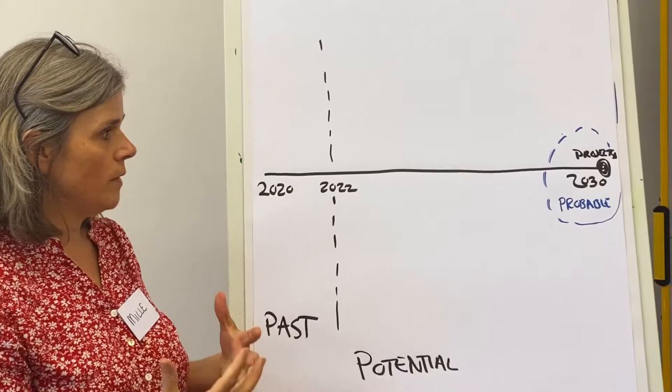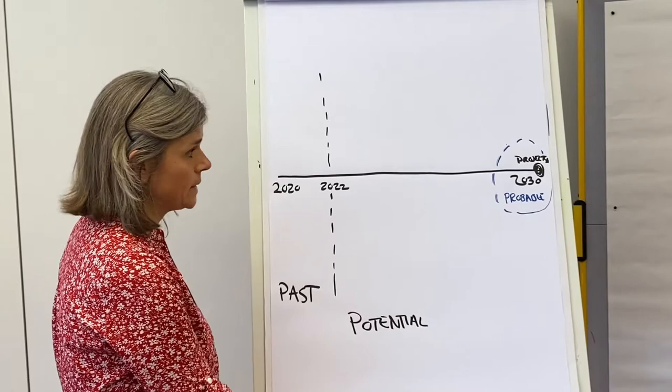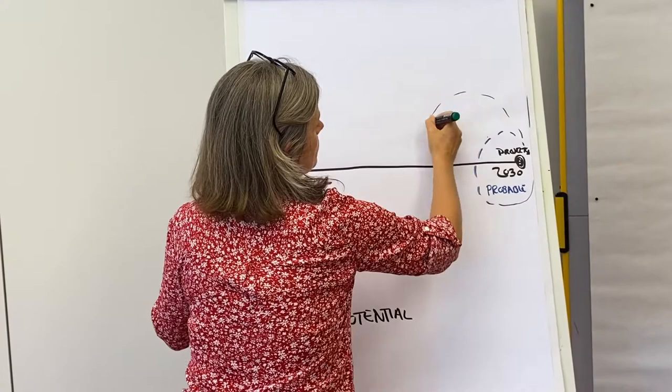And so this is the conversation where we're trying to predict the future, where we're maybe having conversations about what I think will happen, what you think will happen, and we'll pat ourselves on the back if we're right in the future. So we like to be right about what's likely to happen. And that conversation is the conversation of the probable, but it's also quite a limited conversation when talking about the future.